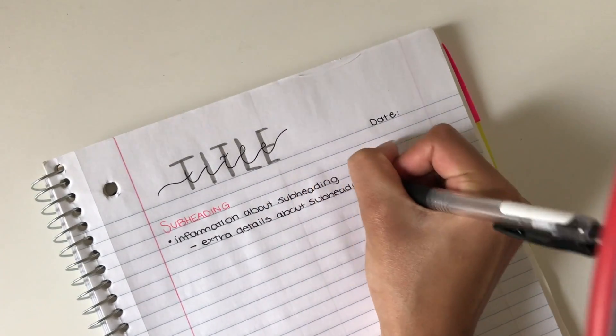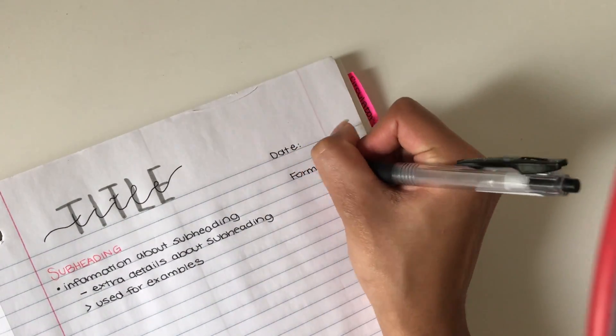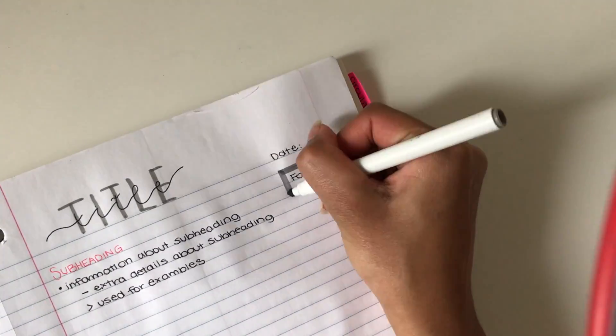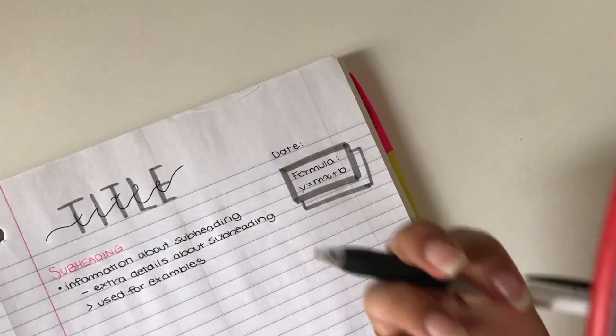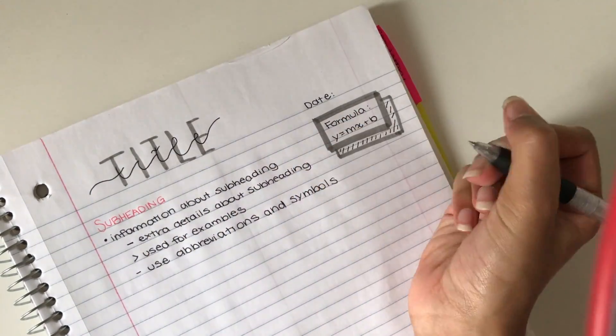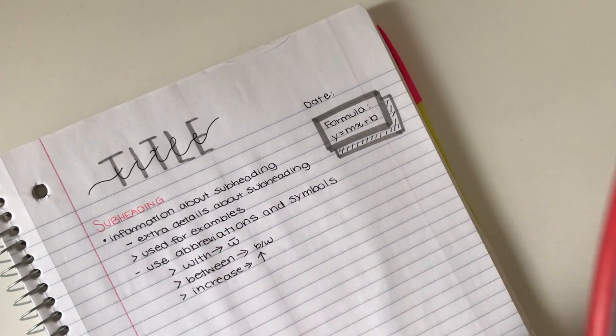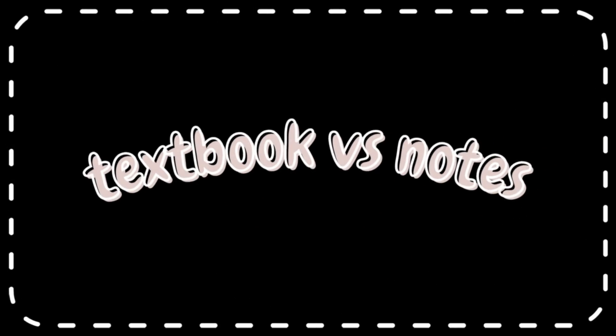Then I use a dot for the information, a dash for extra information about that subheading, and an arrow for examples. In order to make the formula stick out, I usually draw a box around it and make it look very poppy. Make sure to use abbreviations and symbols because that really speeds up your note-taking process.